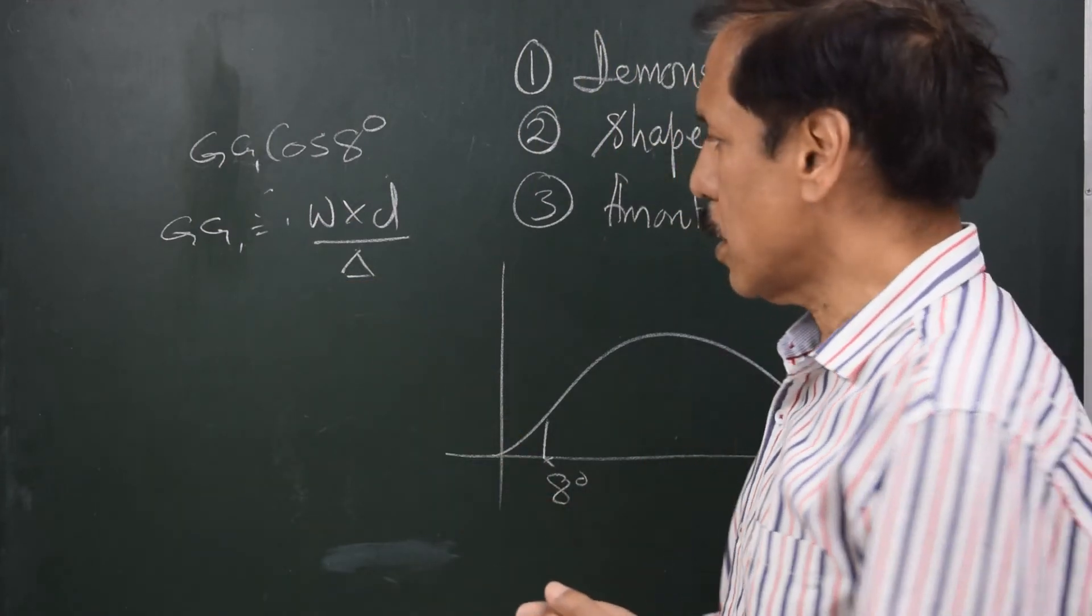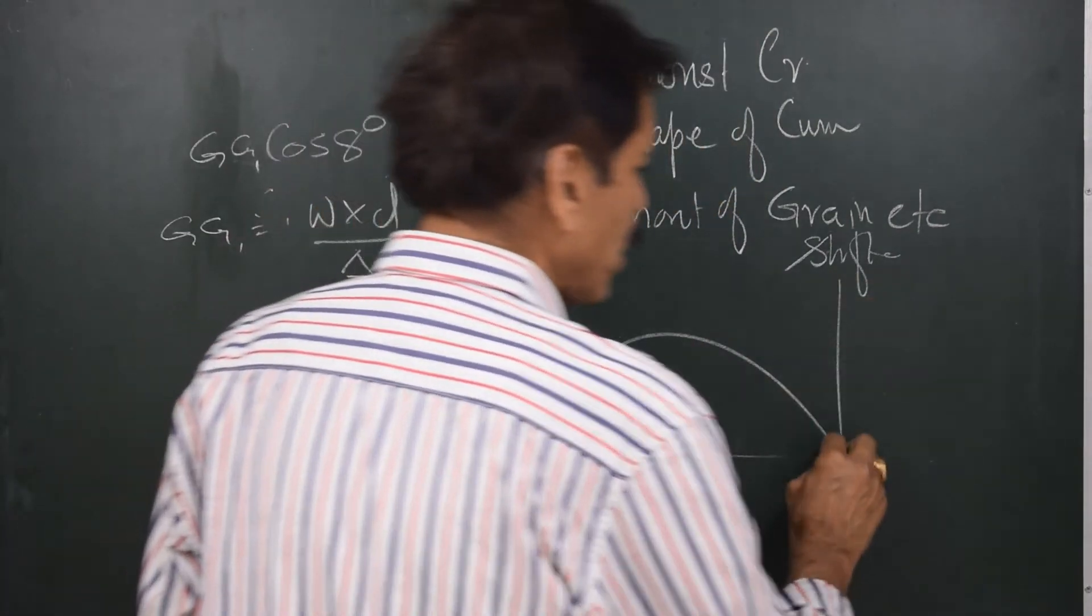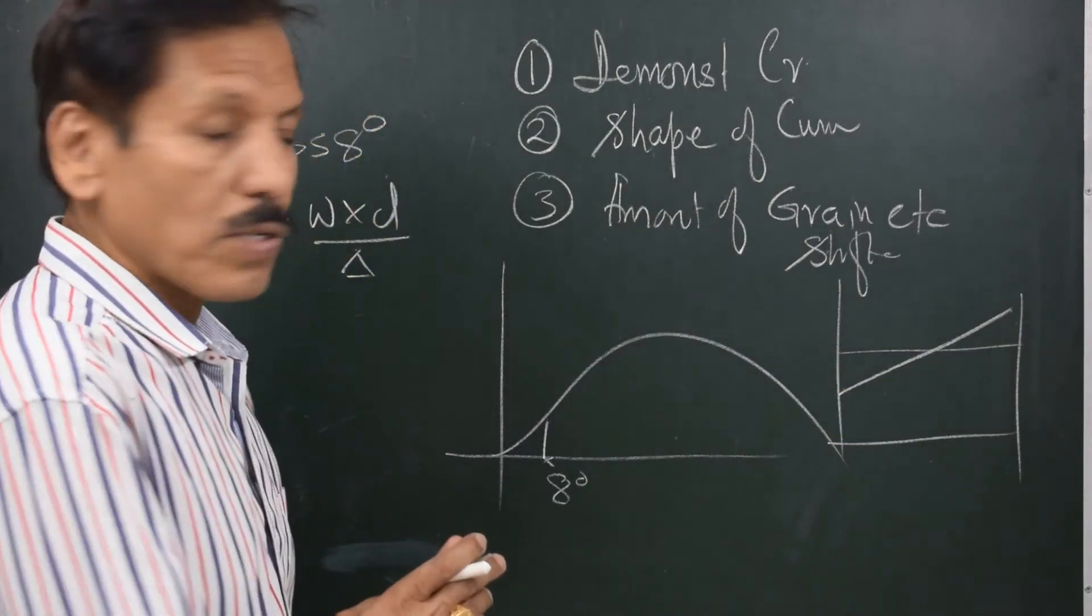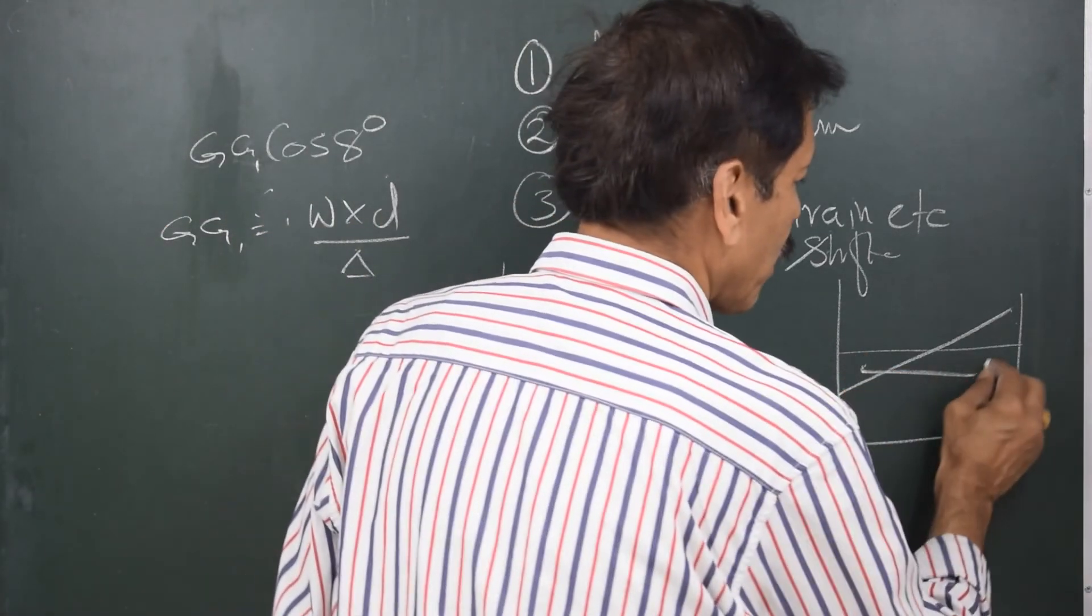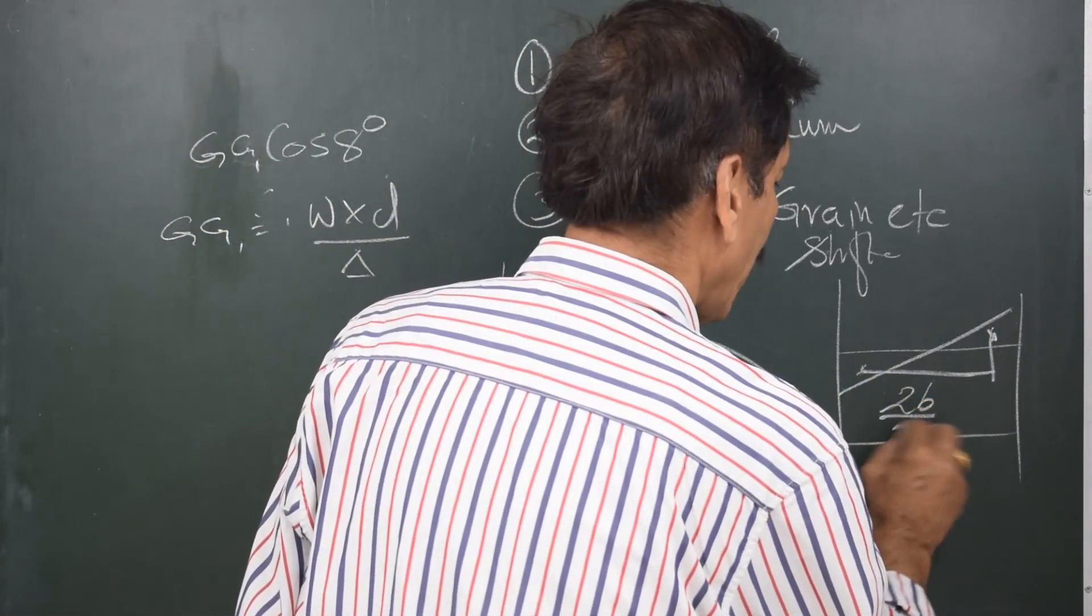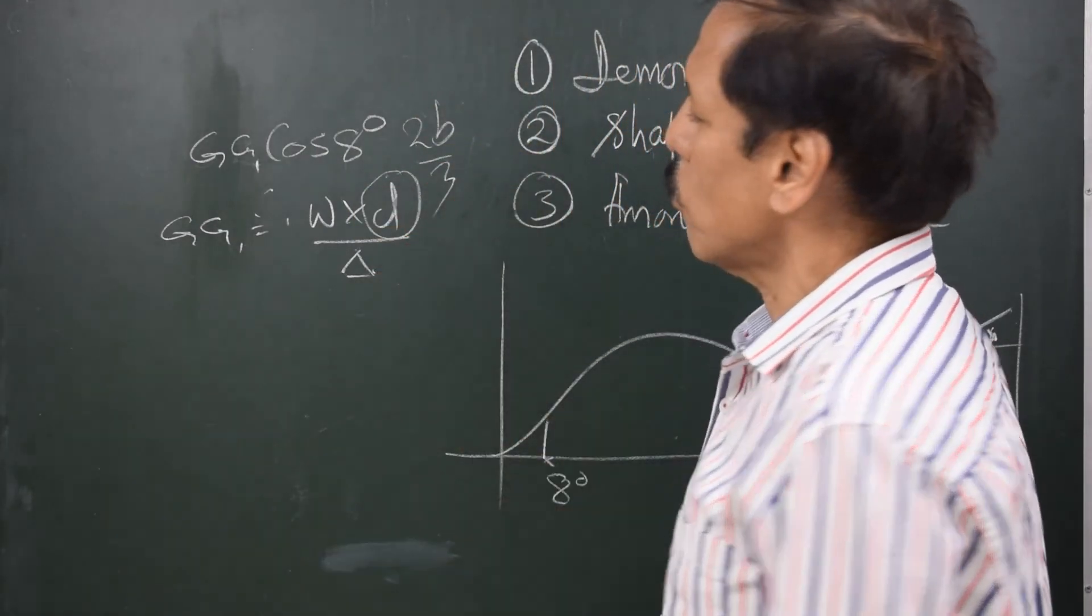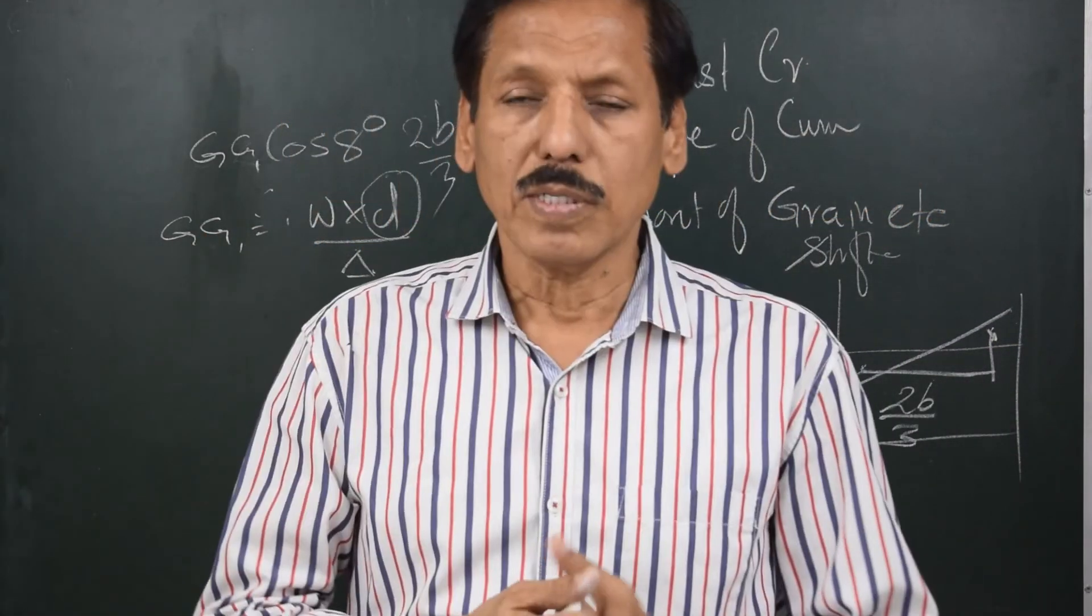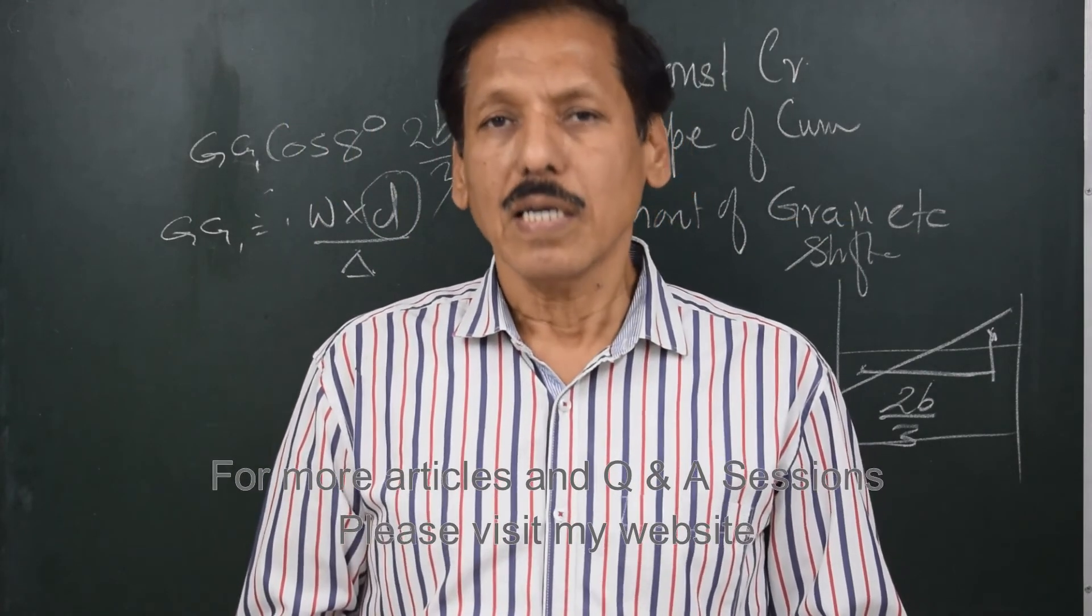The transverse shift of GZ1 is equal to GZ1 is equal to W into D upon displacement. But in case of grain shift, whenever the grain shifts, we assume that a wedge is shifted from port to starboard or starboard to port on the higher side, from lower side to the higher side. And the effective transverse shift of the wedge can be considered as 2 times B upon 3. So when we know the value of D as 2 times B upon 3, we know the displacement, we know GZ1, we can find out how much grain has shifted. This is one of the applications of GZ curve which we can get only if we have stability at large angles of heel.